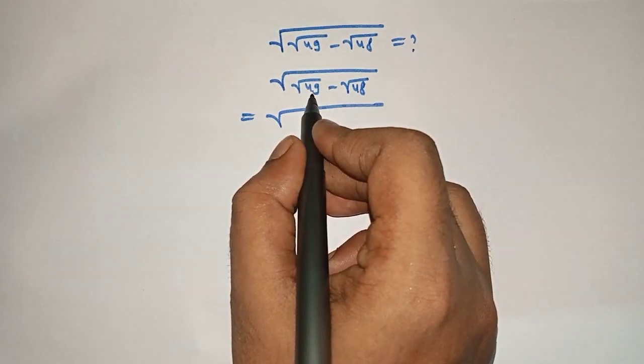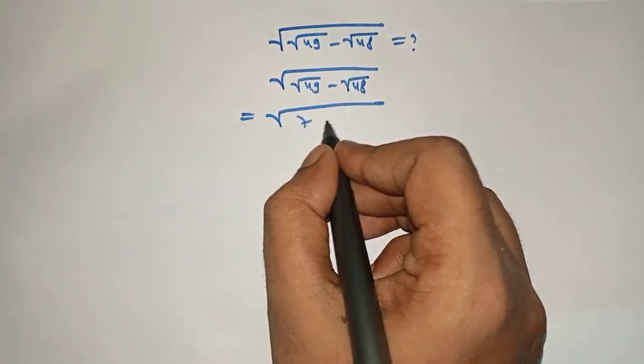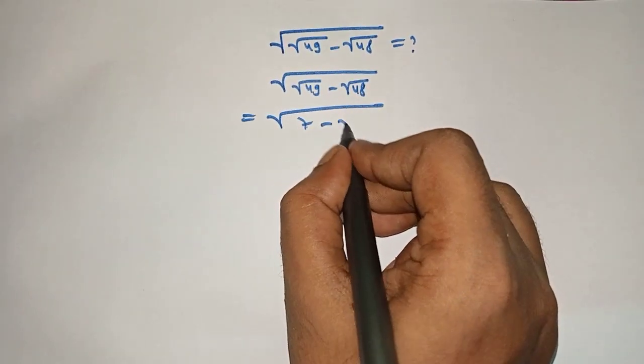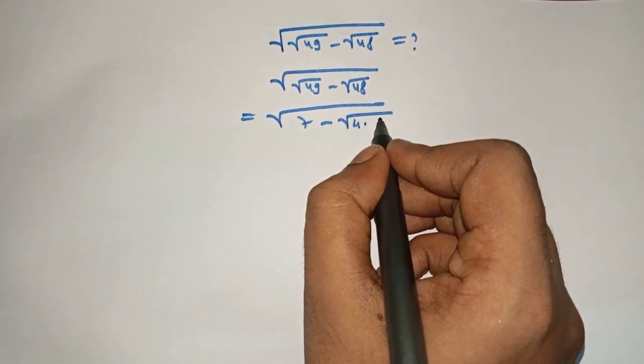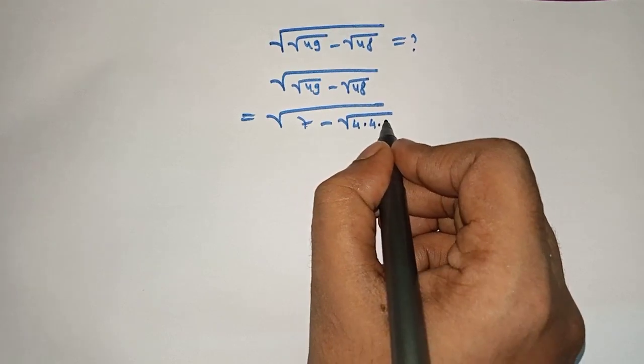Square root of square root of 49 is what? 7 minus square root of 48 can be written as 4 into 4 into 3.